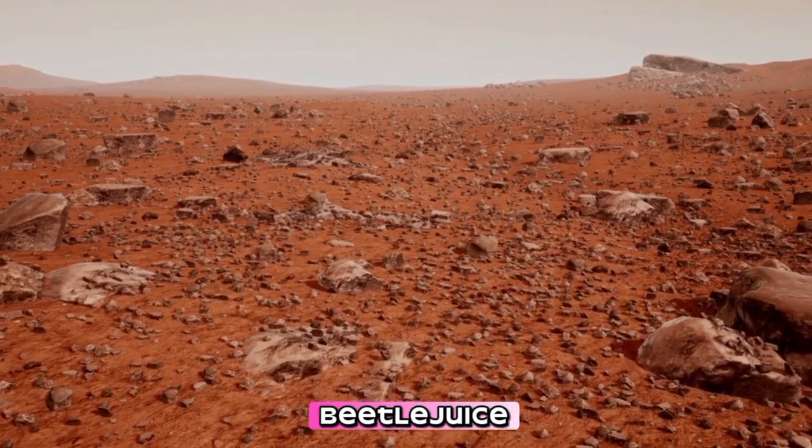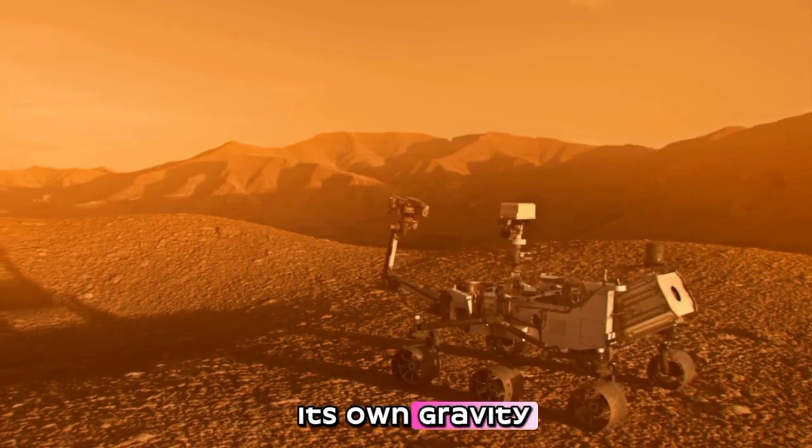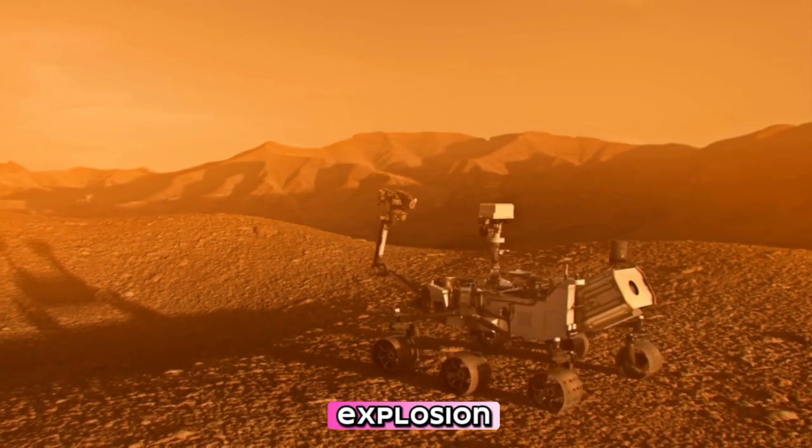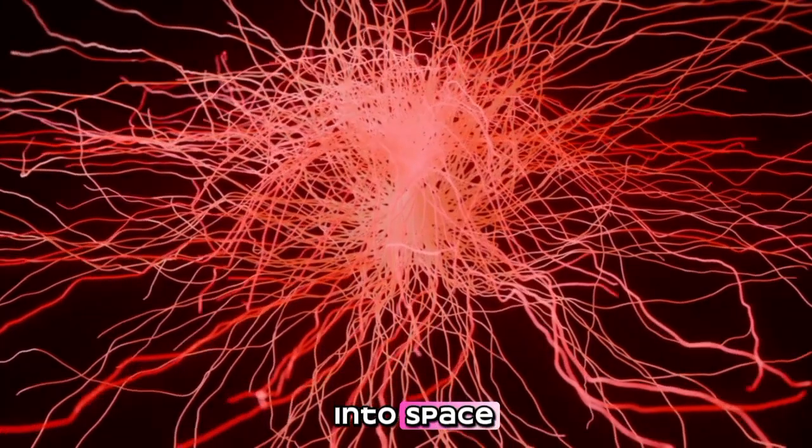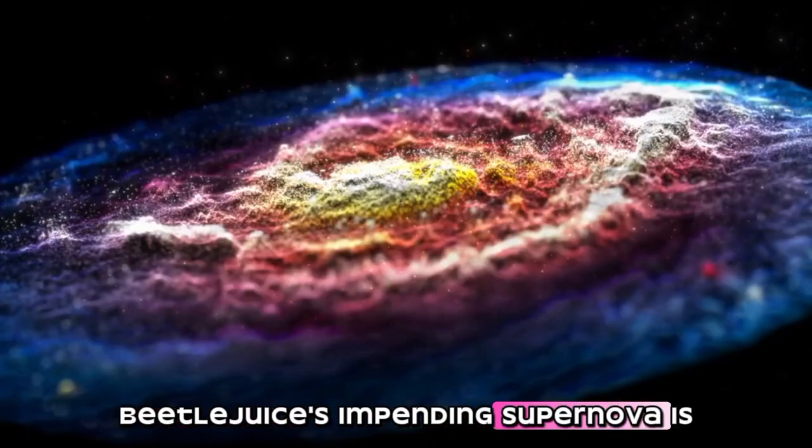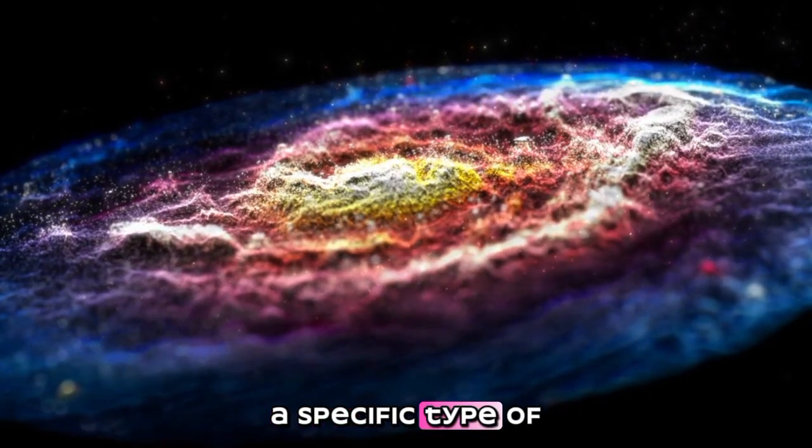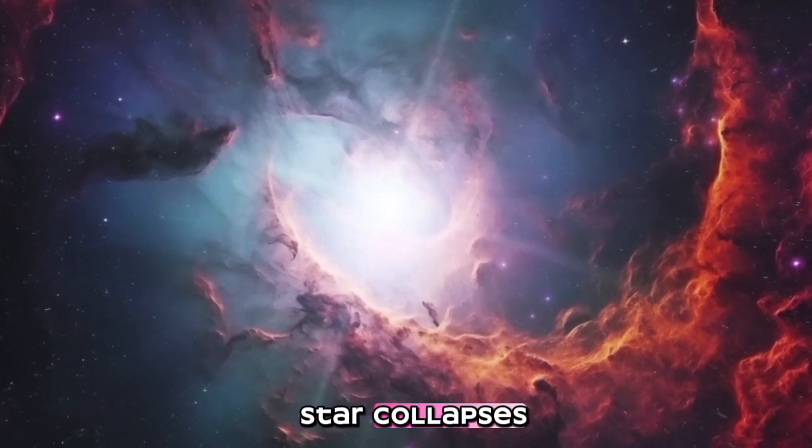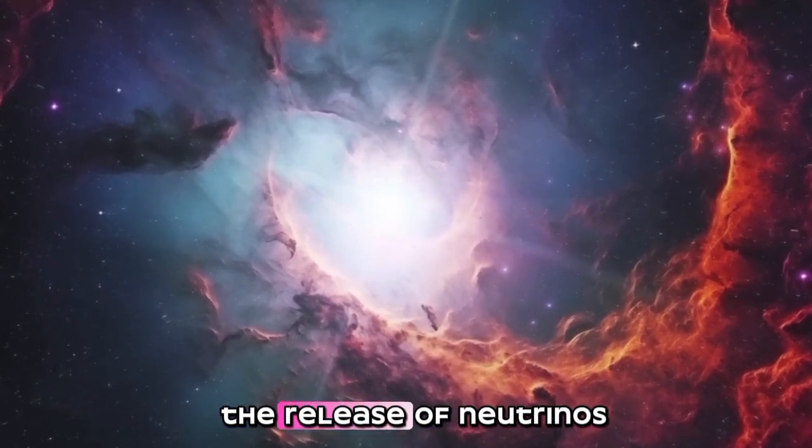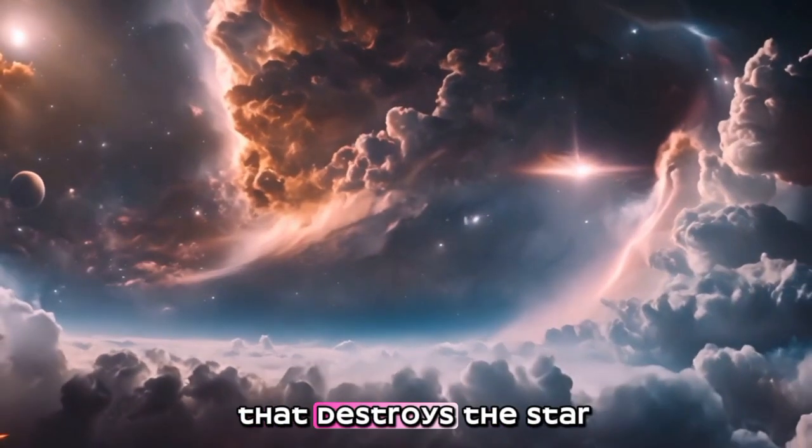When a star like Betelgeuse reaches the end of its life, its core collapses under its own gravity, leading to a massive explosion that releases an immense amount of energy, radiation, and stellar material into space. Betelgeuse's impending supernova is expected to be a Type 2 supernova, a specific type of stellar explosion that occurs when the core of a massive star collapses. This core collapse triggers the release of neutrinos and radiation, creating a shock wave that destroys the star.